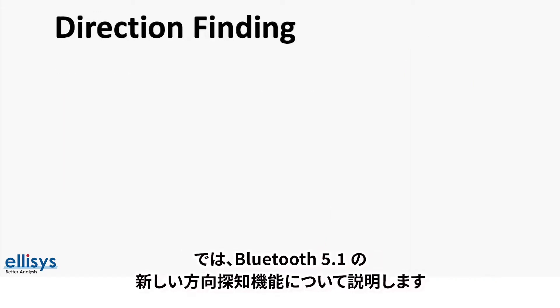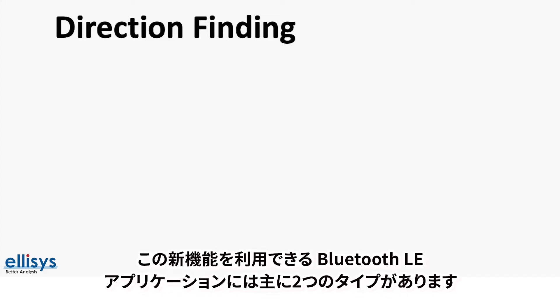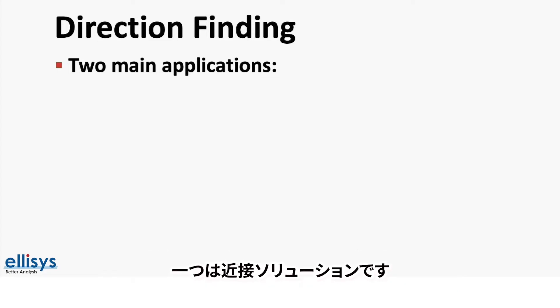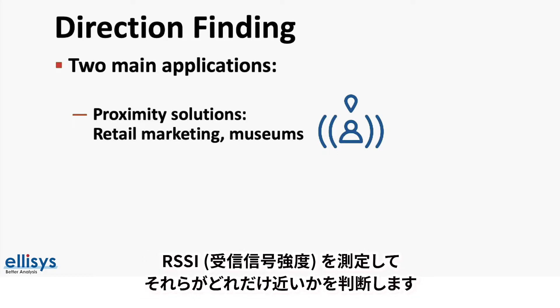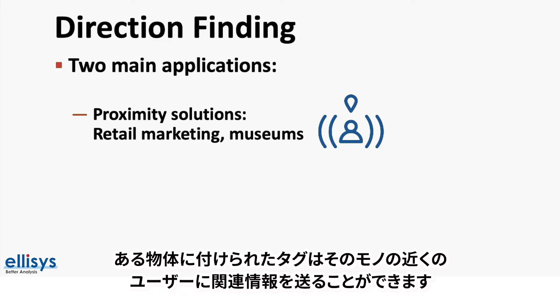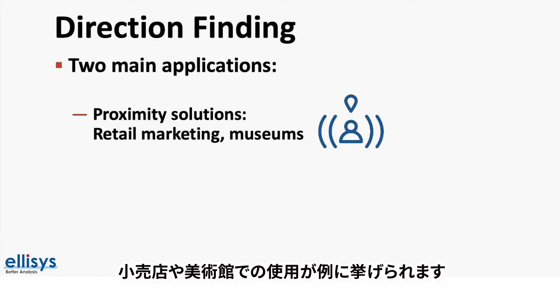Let's first start by talking about the new direction finding feature in Bluetooth 5.1. There are two main types of Bluetooth Low Energy applications that can utilize this new feature. First, we have proximity solutions. Proximity solutions leverage BLE to determine the proximity between two BLE devices — how near they are to each other — via received signal strength information. For example, tags attached to a fixed object display relevant information to a user near the object, such as in retail marketing and museums.